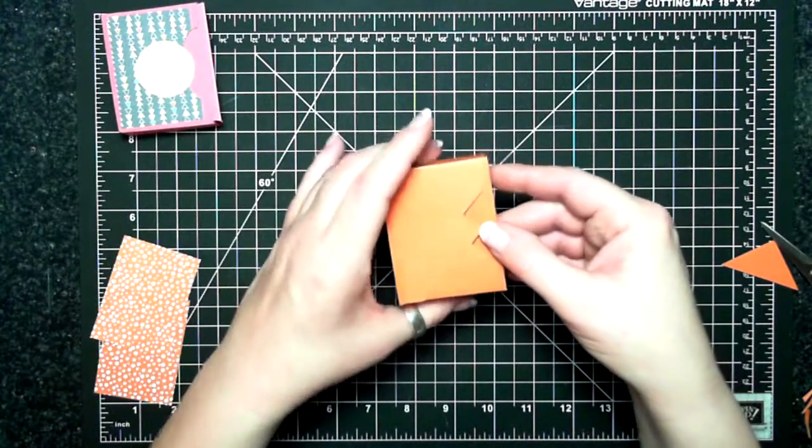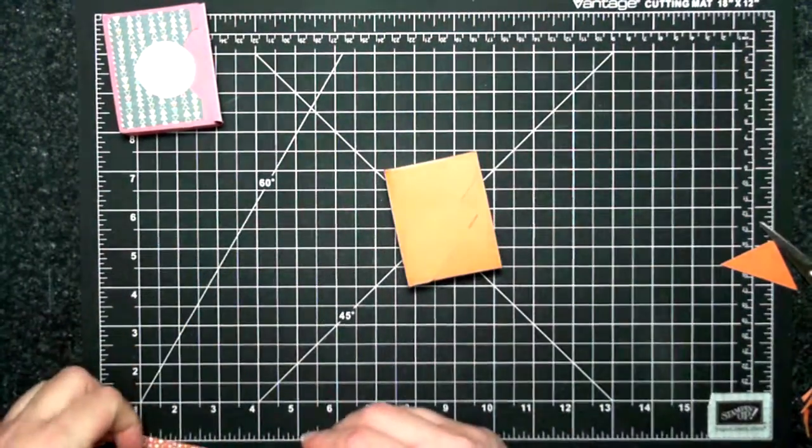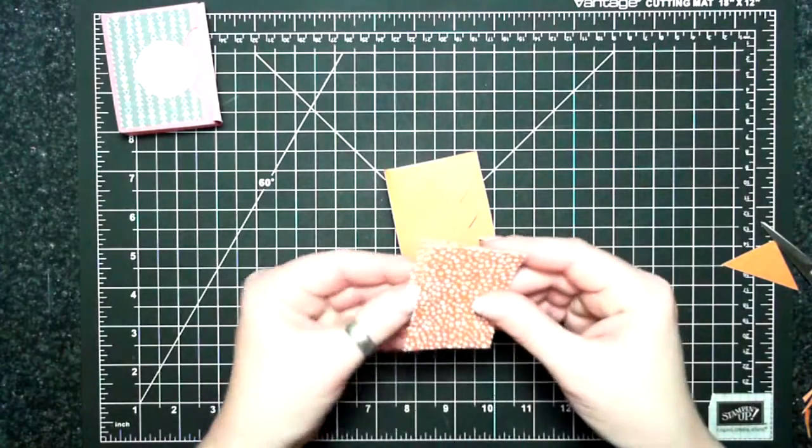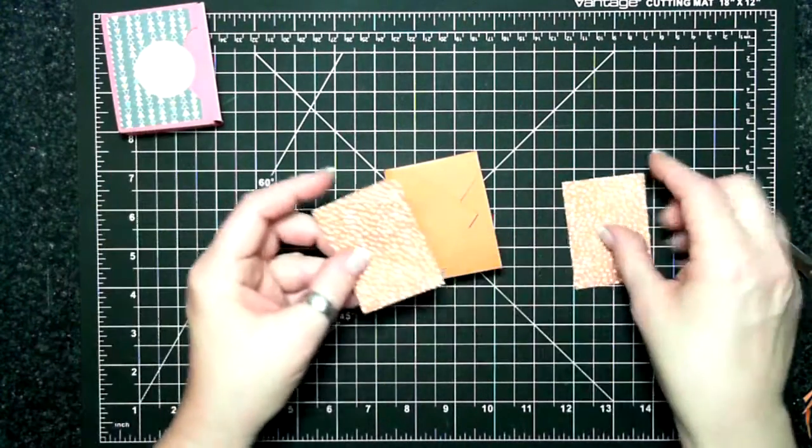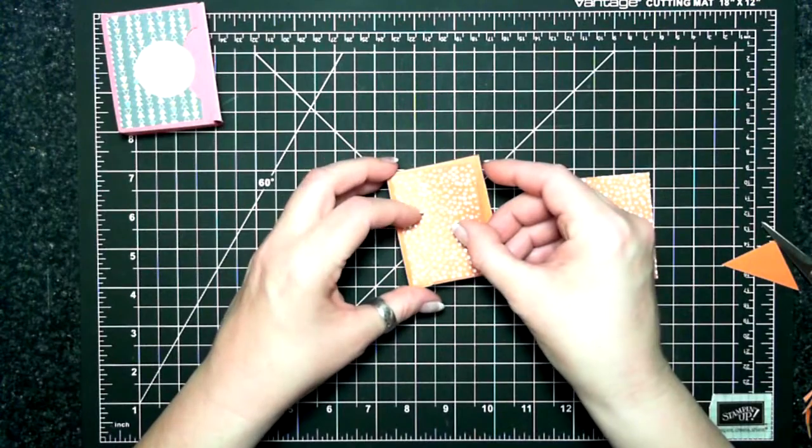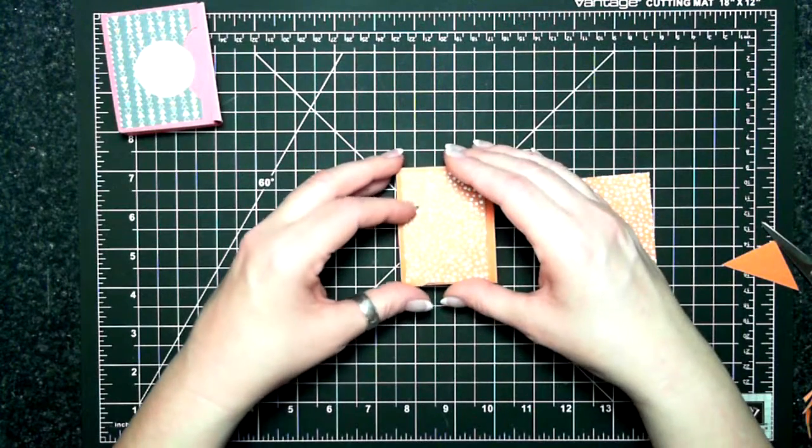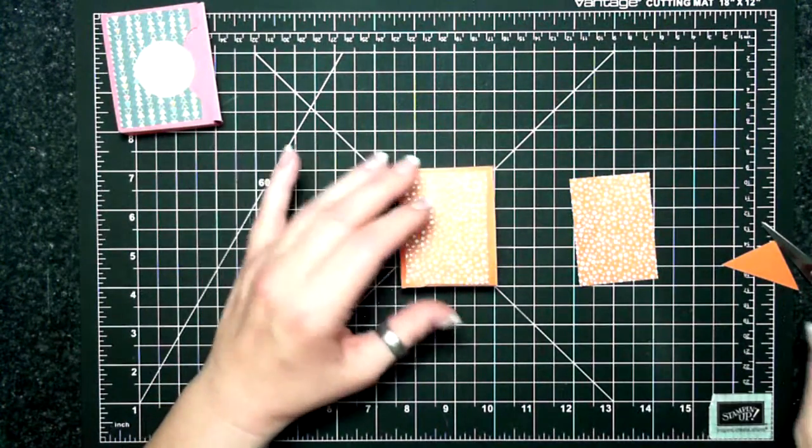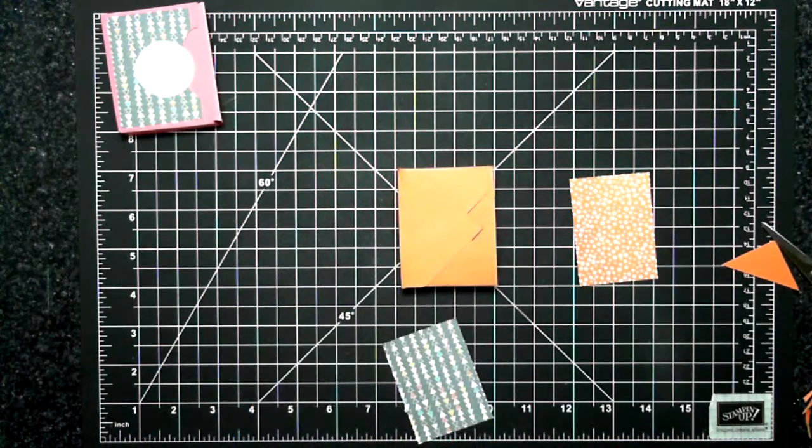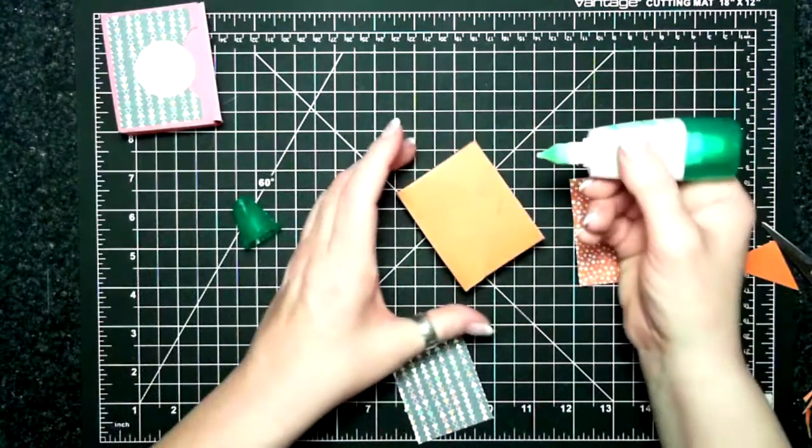Pretty quick box. All right so I am using the Confetti Celebration, that's what I used in the example as well. So the DSP is two inches by two and three quarters.